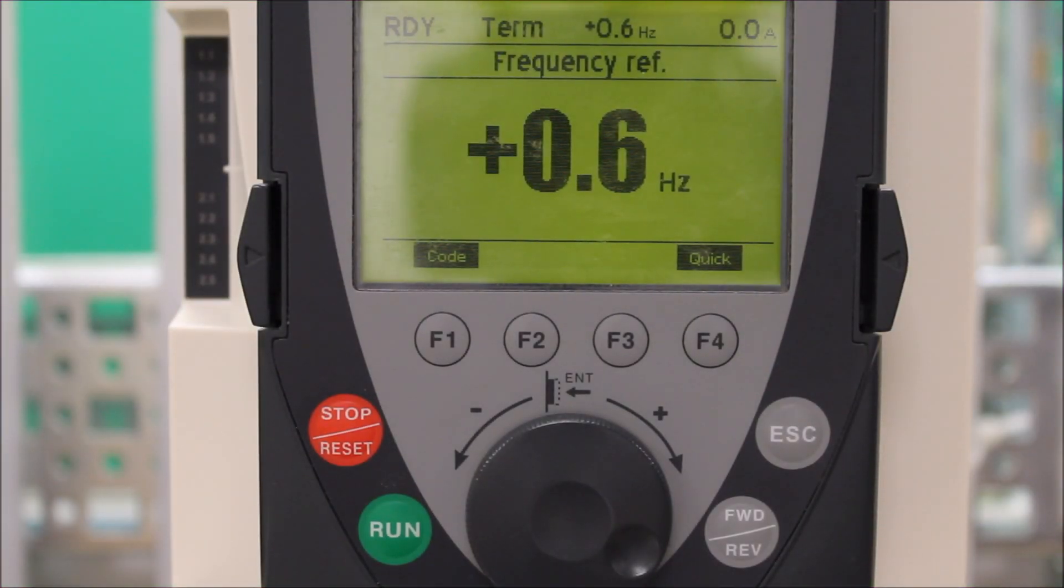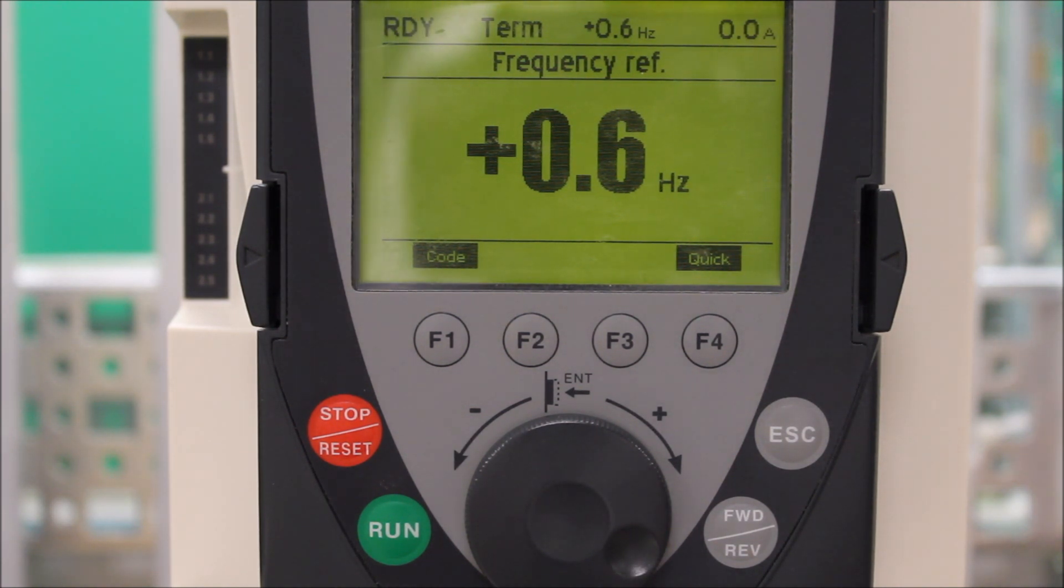In this video, we're going to talk about how to set the ATV-61 and 71 drives analog output to show motor frequency value.